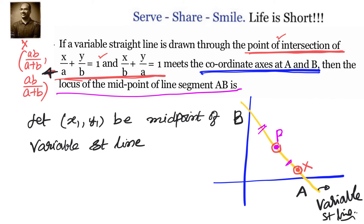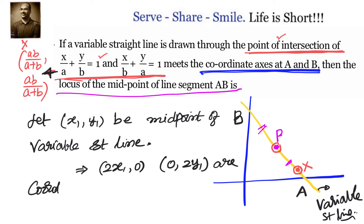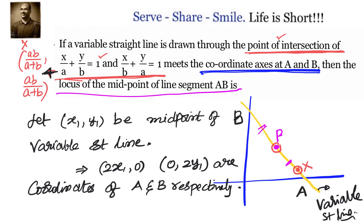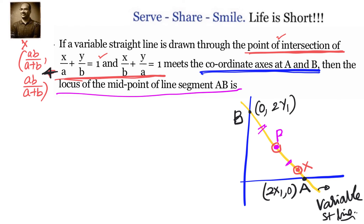If P is (x₁, y₁) and is the midpoint of AB, what are the coordinates of A and B? On the x-axis, y = 0, and on the y-axis, x = 0. So the coordinates of A and B are (2x₁, 0) and (0, 2y₁) respectively. Knowing these, we can find the equation of the variable straight line AB using the intercept form.